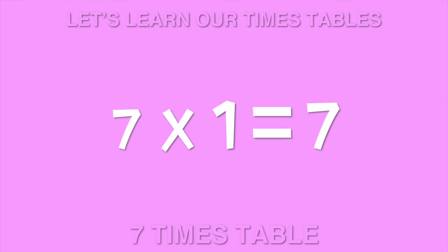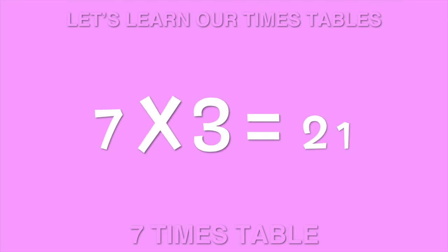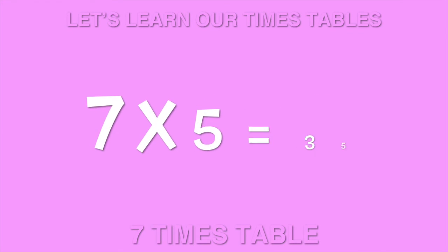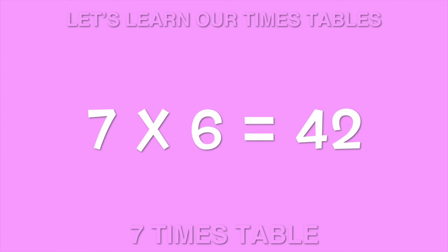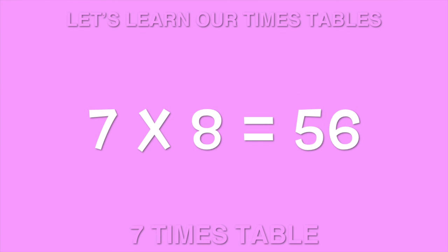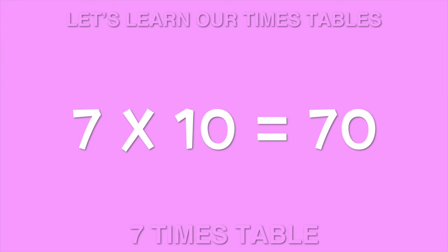7 times 1 is 7. 7 times 2 is 14. 7 times 3 is 21. 7 times 4 is 28. 7 times 5 is 35. 7 times 6 is 42. 7 times 7 is 49. 7 times 8 is 56. 7 times 9 is 63. 7 times 10 is 70.